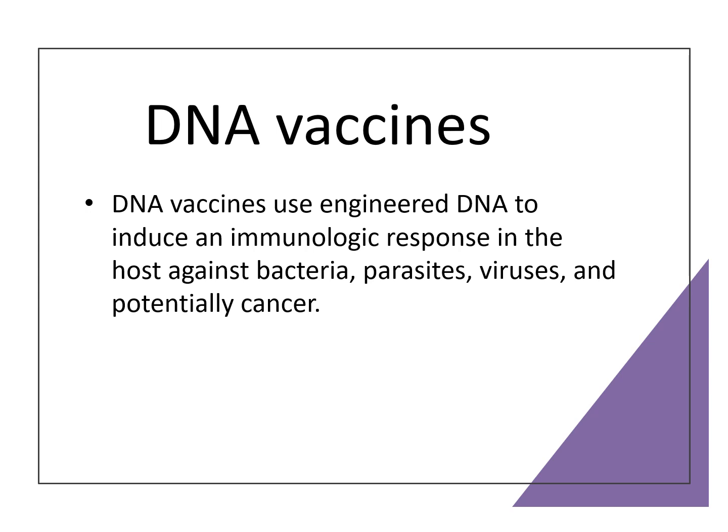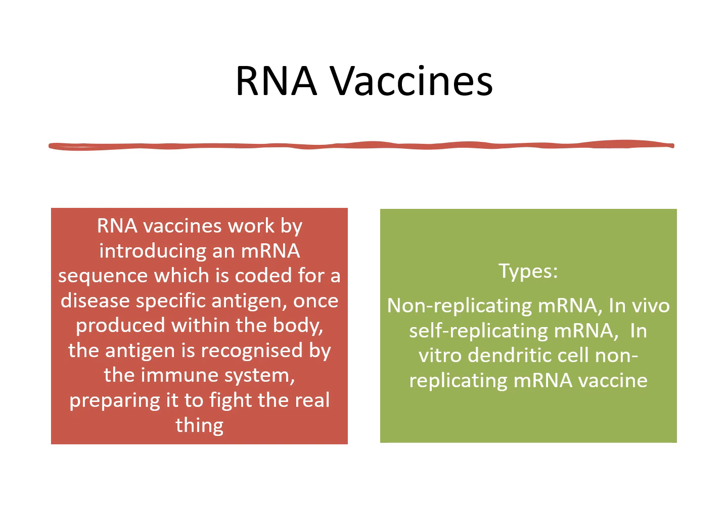DNA vaccines use engineered DNA to induce an immunological response in the host against bacteria, parasites, viruses, and sometimes cancer. RNA vaccines — the last type — work by introducing an mRNA sequence which codes for a disease-specific antigen. Once produced within the body, the antigen is recognized by the immune system so that it is prepared when the real pathogen enters.